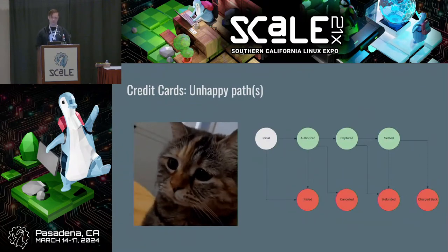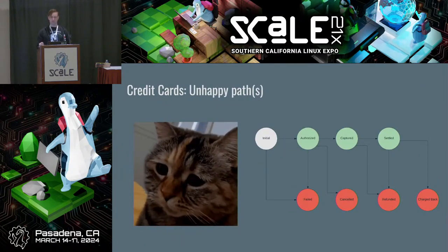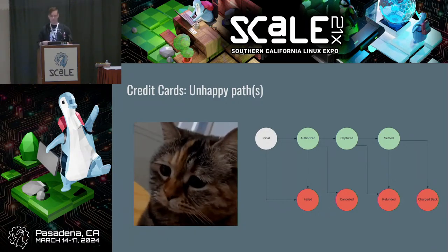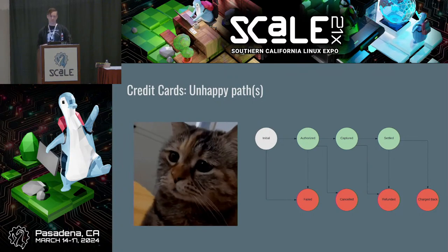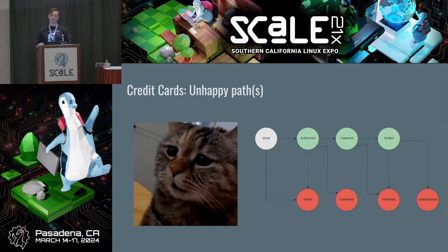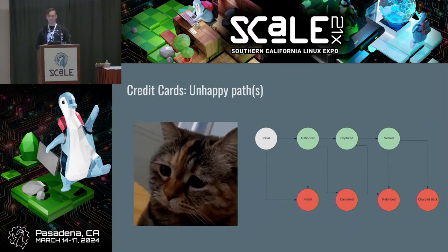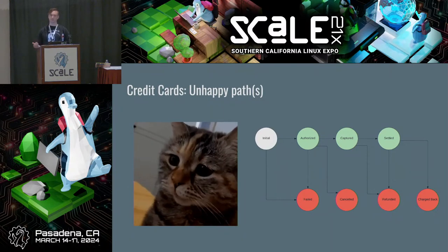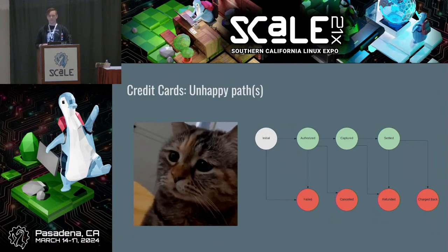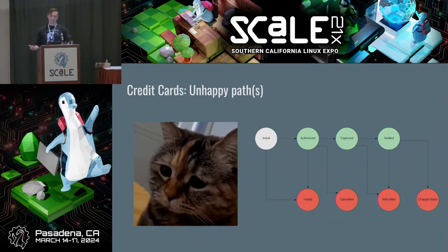We only went over the happy path though. There are red nodes to talk about. Most of these are expected — as a developer, you'll expect that not every card swipe is going to be successful. That will fail for a number of reasons: at point of sale maybe it's insufficient funds; online it could be a bad credit card number, bad expiration. There are all kinds of codes, some of which are recoverable, some of them aren't.